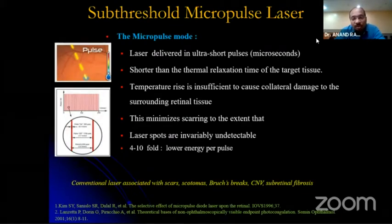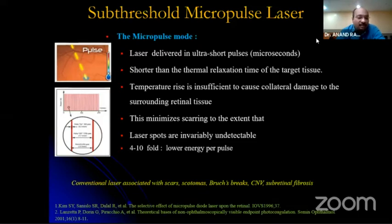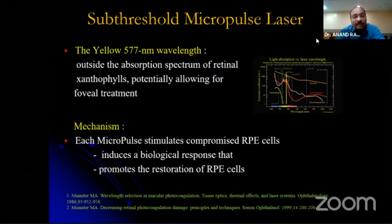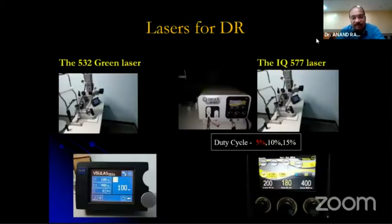Subthreshold micropulse laser has really caught on in the last half decade. In micropulse mode, the laser is delivered in ultra-short pulses in microseconds — shorter than the thermal relaxation time of the target tissue. The temperature rise is insufficient to cause collateral damage to surrounding retinal tissue. There is a 4 to 10-fold lower energy per pulse, and the laser marks are invariably undetectable. Each micropulse stimulates the compromised RPE cells and promotes their restoration.